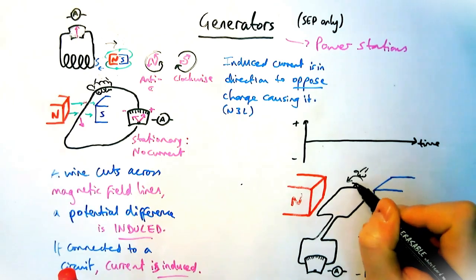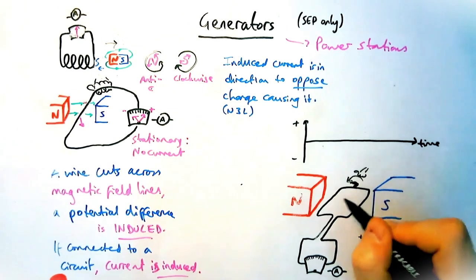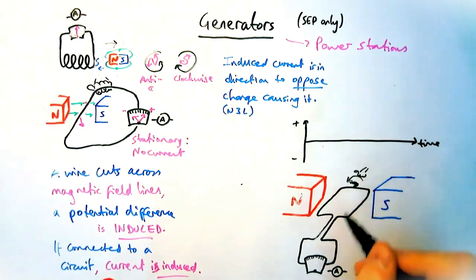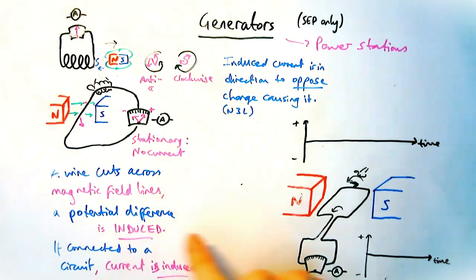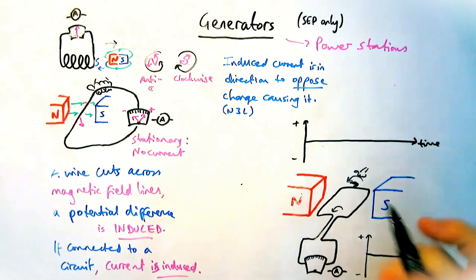And you'll notice this looks very similar to the motor we looked at in a previous video. This time, though, someone is turning the wire. So you have motion going into the coil of wire this time rather than coming out. And as you turn the wire around an axis, there will be some PD-induced and electric current-induced.